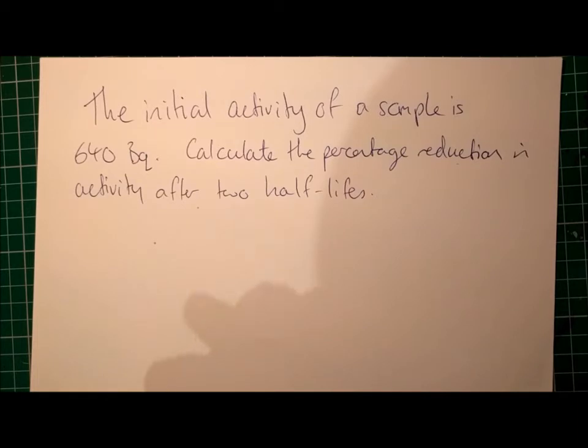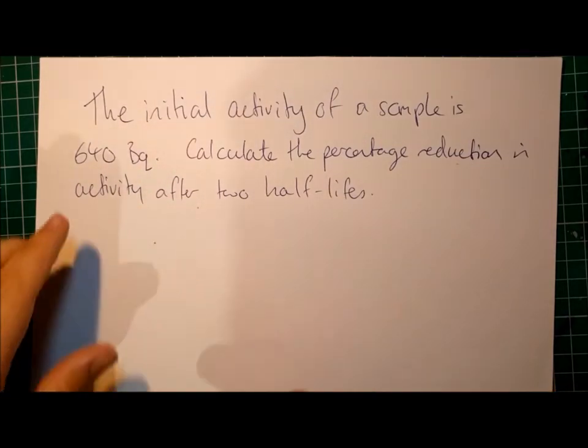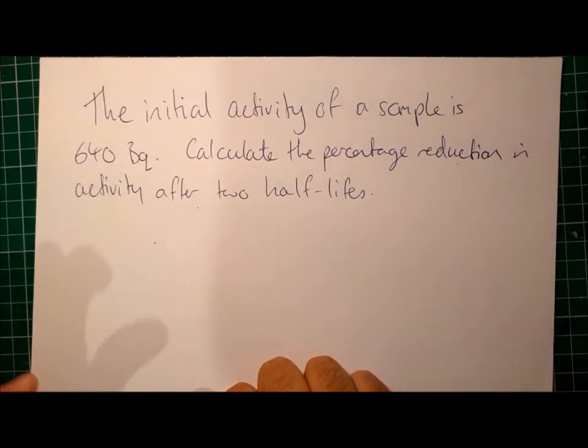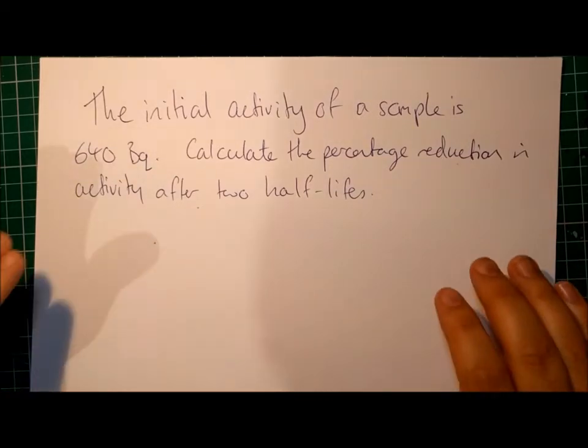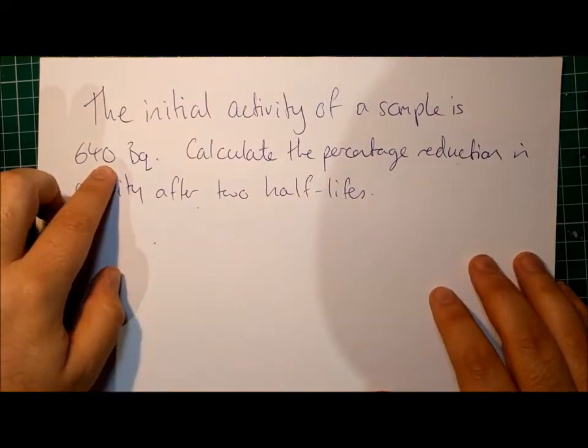In this instance, we have a question asking for percentage reduction, which is simply saying, by what percentage has the count rate reduced? To know a percentage, you need to know your final number, your part. You need to divide it by the total, or in this case, our initial number of 640, and then times it by 100 to get a percentage. So we need to know what the final number is. In other words, what is the count rate after 2 half-lives?